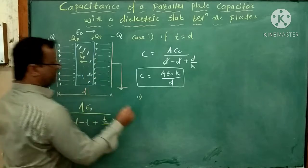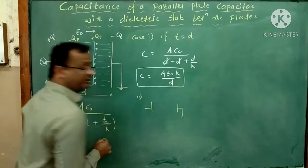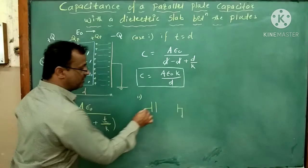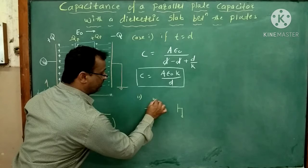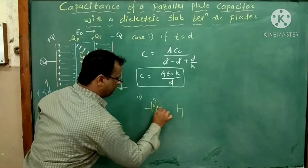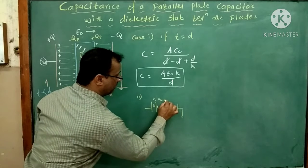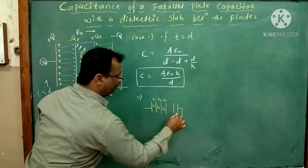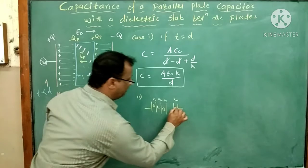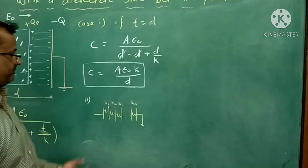It means this capacitor has its space filled by different dielectric slabs. The first slab has dielectric constant K1 and thickness T1. The second has thickness T2 and dielectric constant K2. Then T3 with K3, and so on. Suppose we introduce N number of slabs.